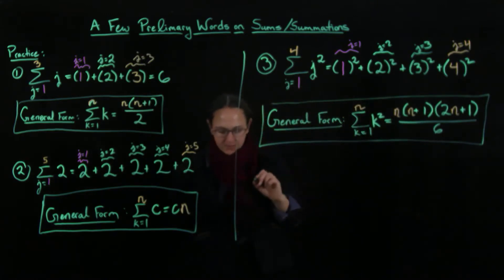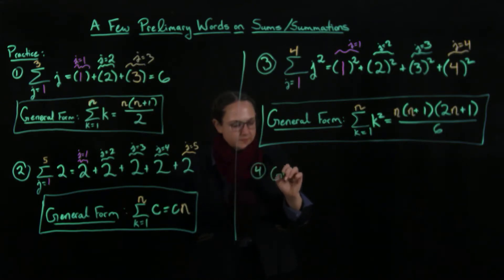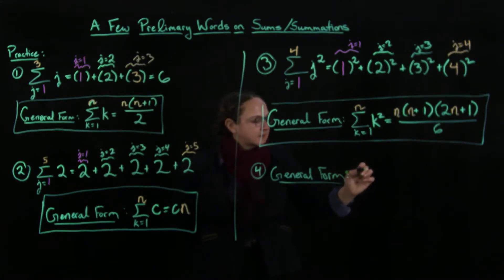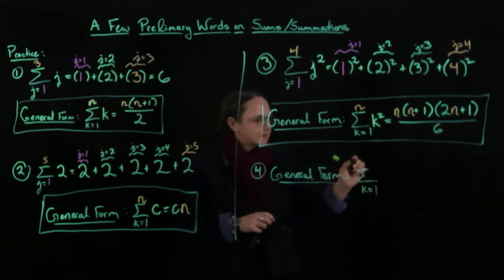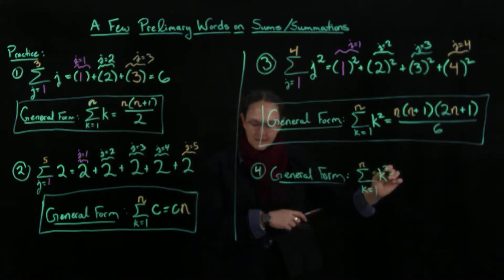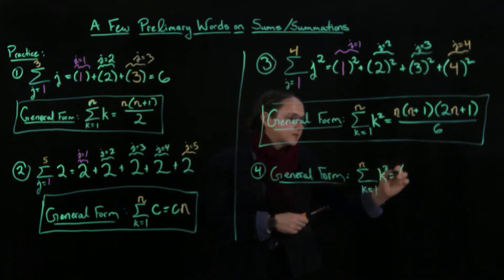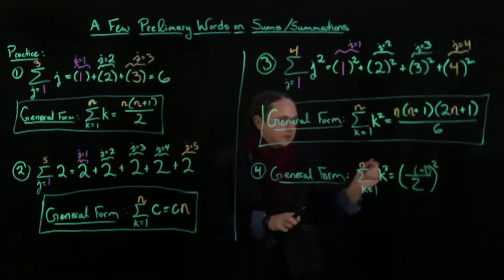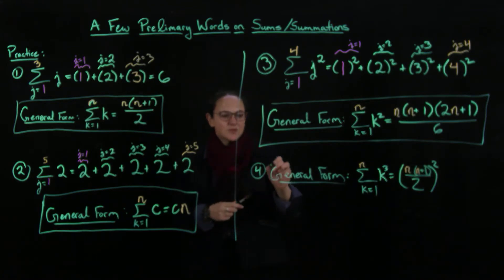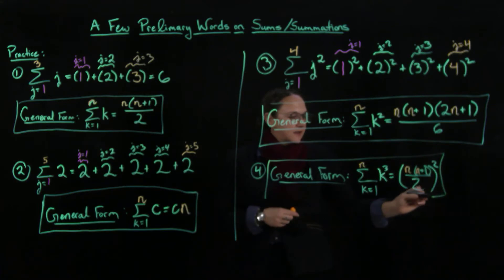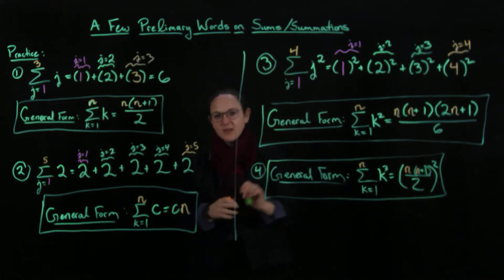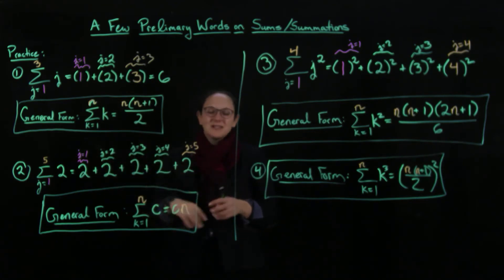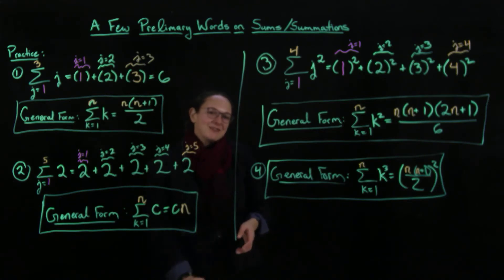The last one you'll need to know — I won't go through an example since you've gotten the point — is the sum from k=1 to n of k³, which equals [n(n+1)/2]², that is, the whole thing squared. For these formulas, you'd really want a proof-based calculus class to do a proof by induction, but these are the useful summations to have on hand.